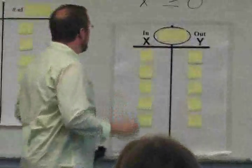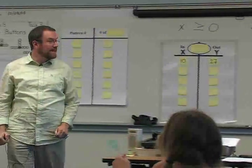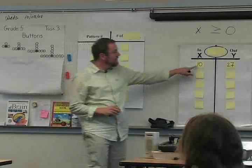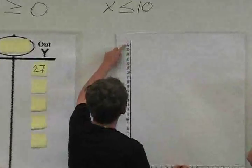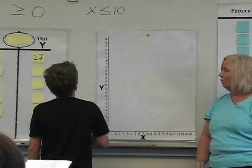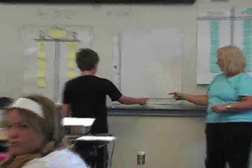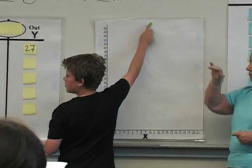Christina guesses x = 10. David comes up to plot the point and explains: "I went 10 on the x and then I went 27 right here." The point (10, 27) is placed on the graph.